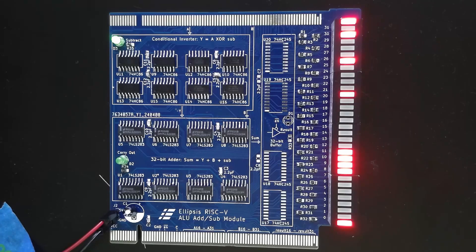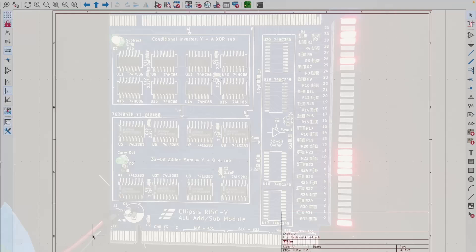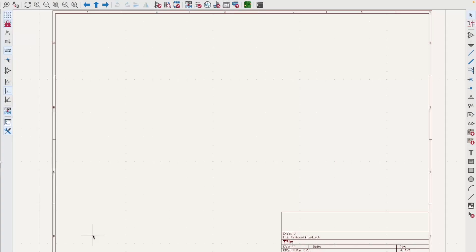So I'm going to develop a test module that I can plug this into, and then I'll be able to drive those A and B inputs, set whether I'm subtracting or not, and read the result out. I'll create another board here in KiCad, and the first thing I'll do is add a PCI Express card edge connector.